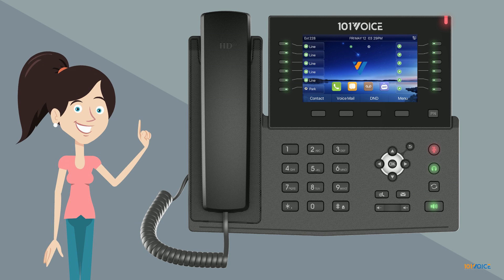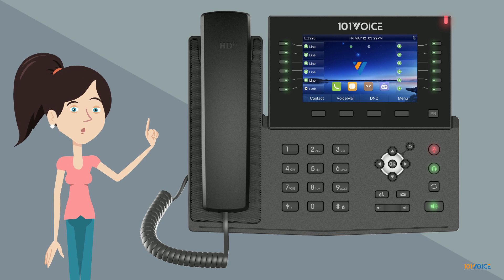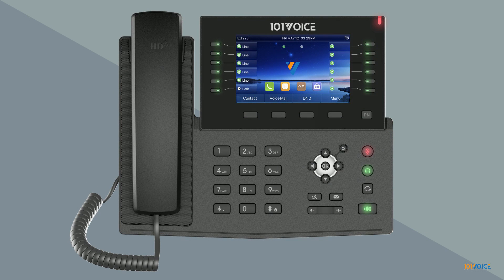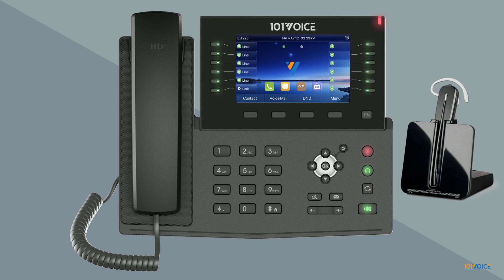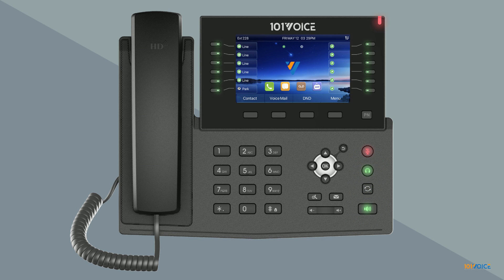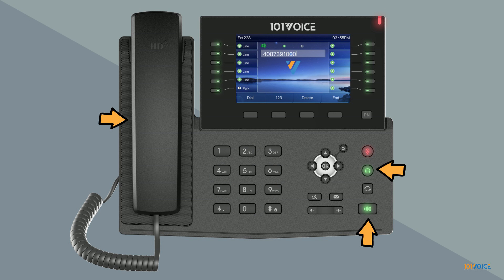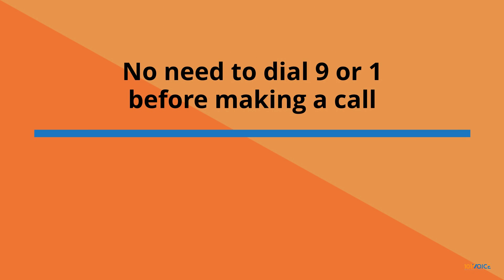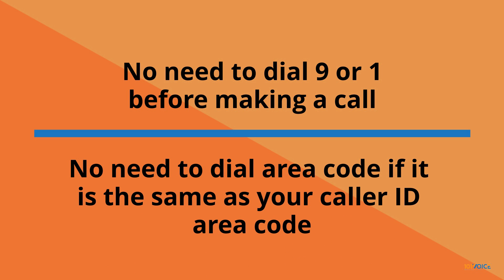Now that you're familiar with the various components of your phone, let's go over the essential functions. To place a call, either pick up the handset, press the hands-free speaker key, or if you have a compatible headset attached, press the headset key. Then use the dial pad to enter the number. Alternatively, you can enter the first number using the dial pad, then pick up the handset, or press the speaker or headset key. You do not need to dial a 9 or a 1 before making a call. You also do not need to dial the area code, provided the number you're dialing has the same area code as your phone's caller ID.